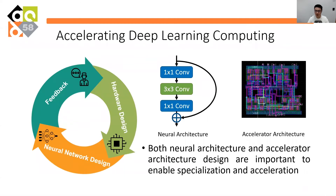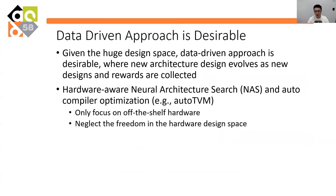As the rapid development and deployment of deep learning, accelerating deep learning computing has received lots of interest. Both Neural Architecture and Accelerator Architecture design are important to enable the specialization and acceleration of deep learning applications. Given the huge design space, a data-driven approach is desirable, where a new architecture design evolves as new designs and rewards are collected. Both hardware-aware Neural Architecture Search and Auto-Compiler Optimization are typical examples of data-driven approaches. However, this work only focuses on off-the-shelf hardware and ignores the freedom in the hardware design space.